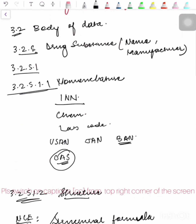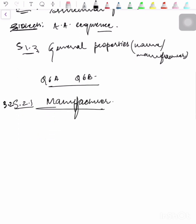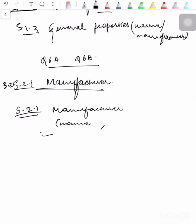Similarly, for the manufacturer section: 3.2.S.2.1 is manufacturer. Here you describe the name, address, and responsibility of each manufacturer, including contractors and each proposed production site or facility involved in manufacturing and testing. The next point covers the description of the manufacturing process and process controls.